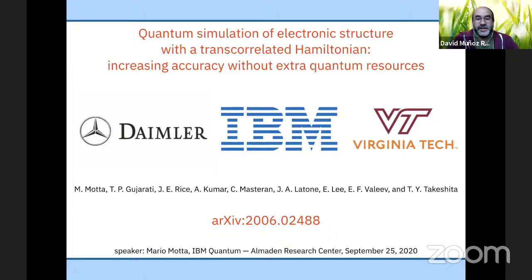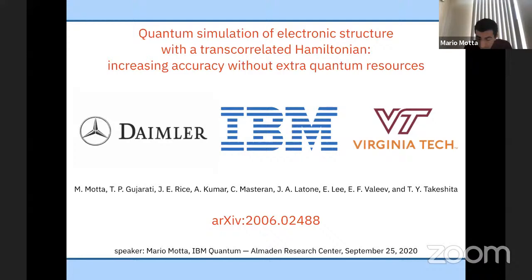We are here for the last talk of the workshop. It's my pleasure to introduce Mario Mota from IBM Research at Almaden, who is going to give us a talk about the interesting subject of transcorrelated Hamiltonians. This is a collaboration between the research divisions of IBM and Mercedes-Benz and the chemistry department at Virginia Tech.